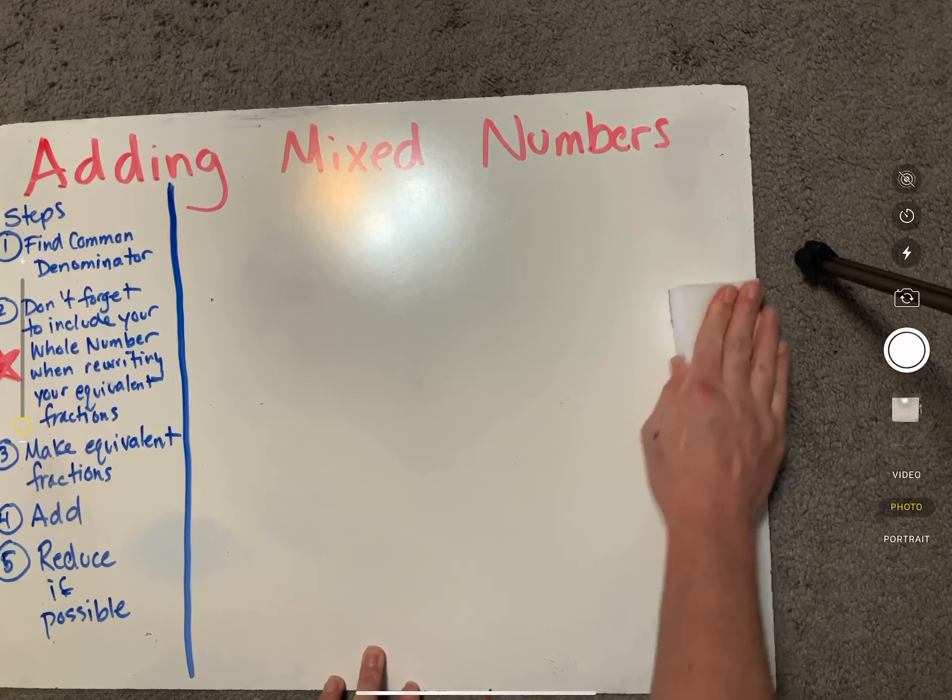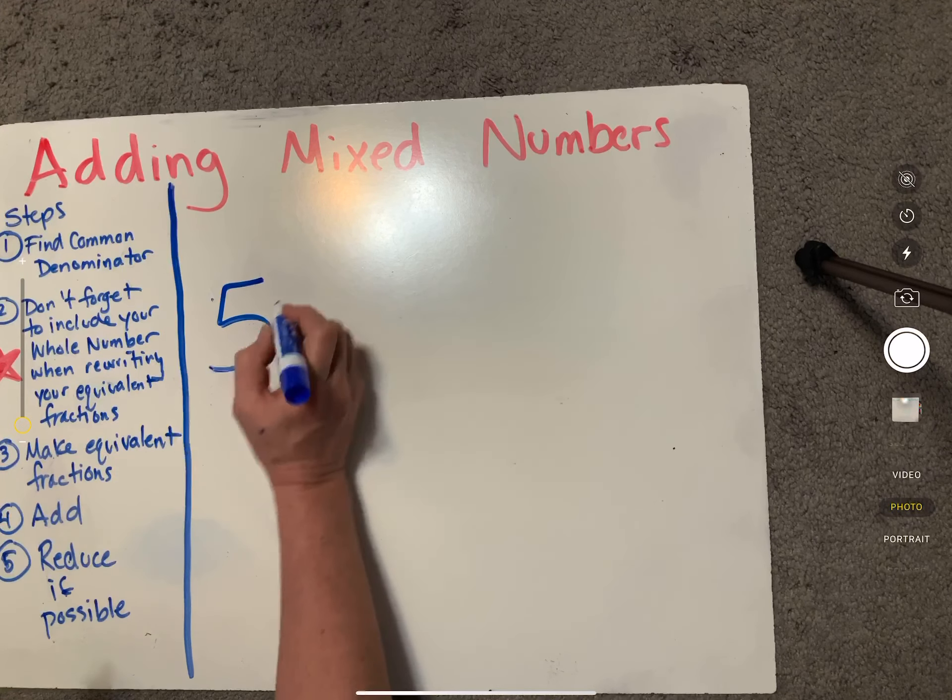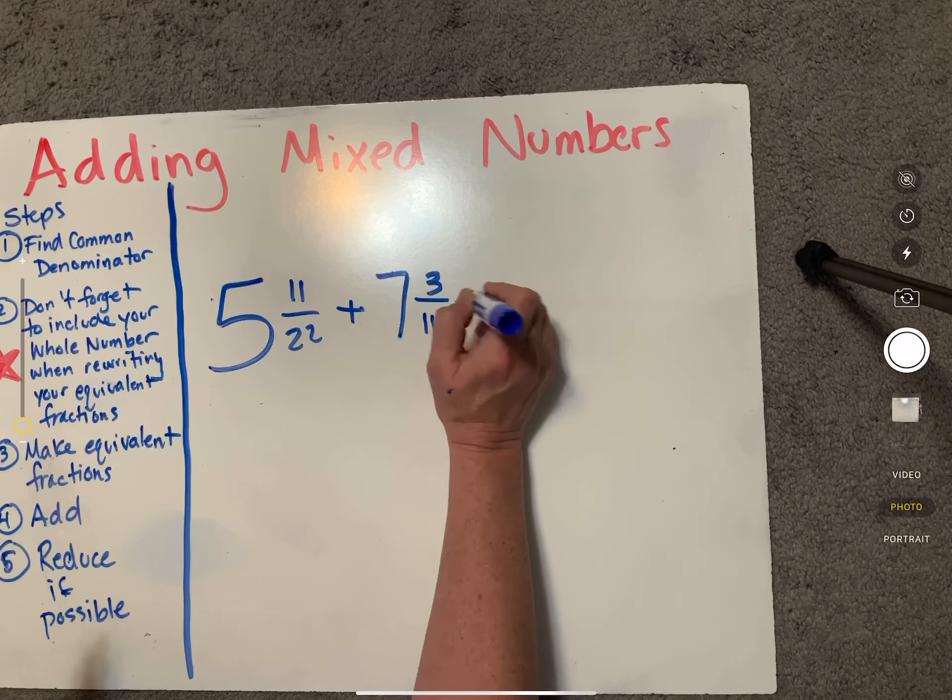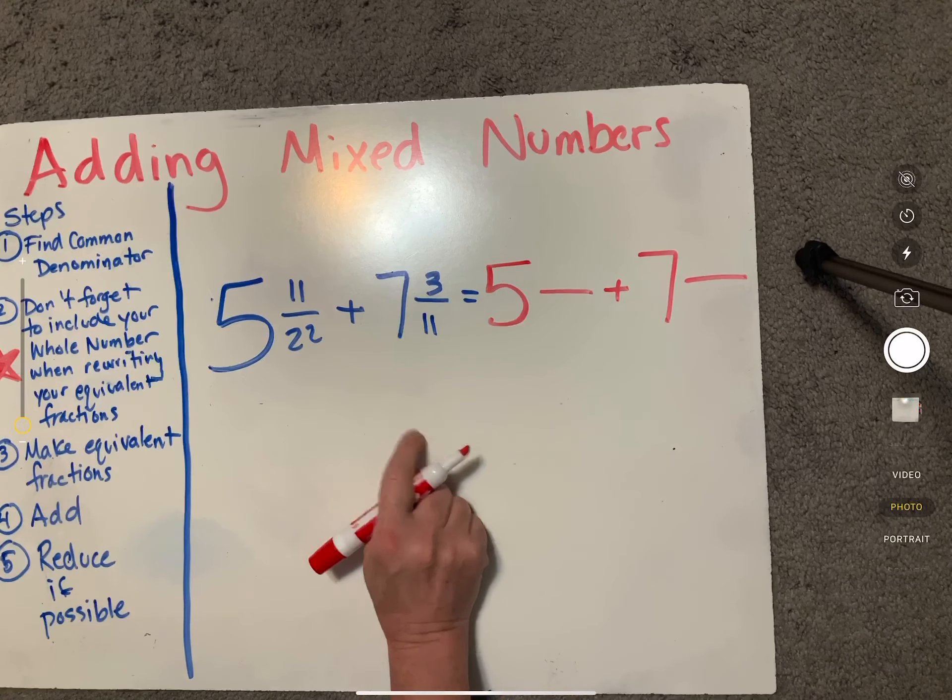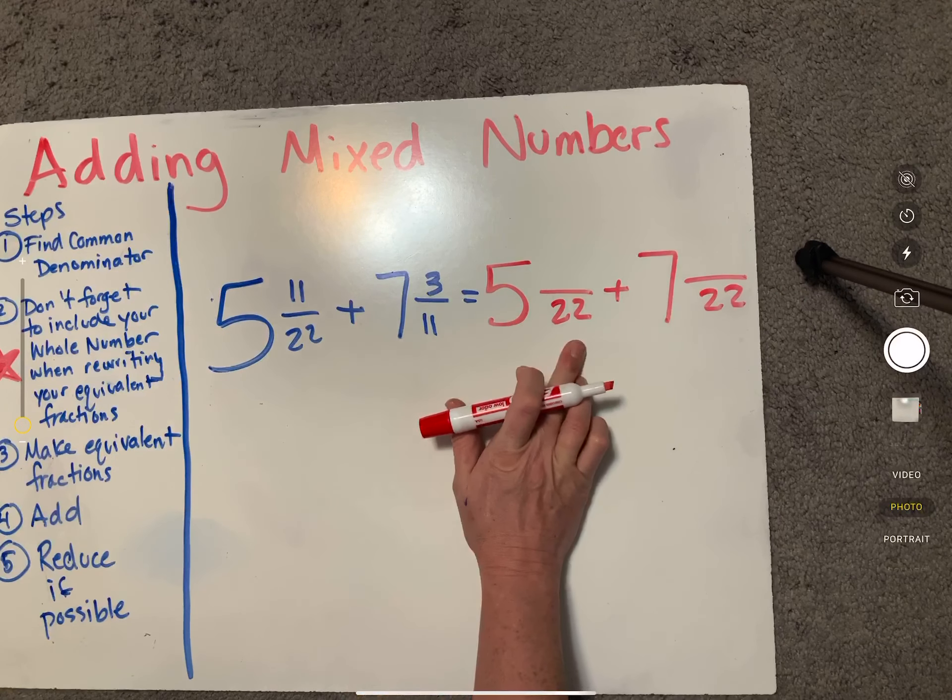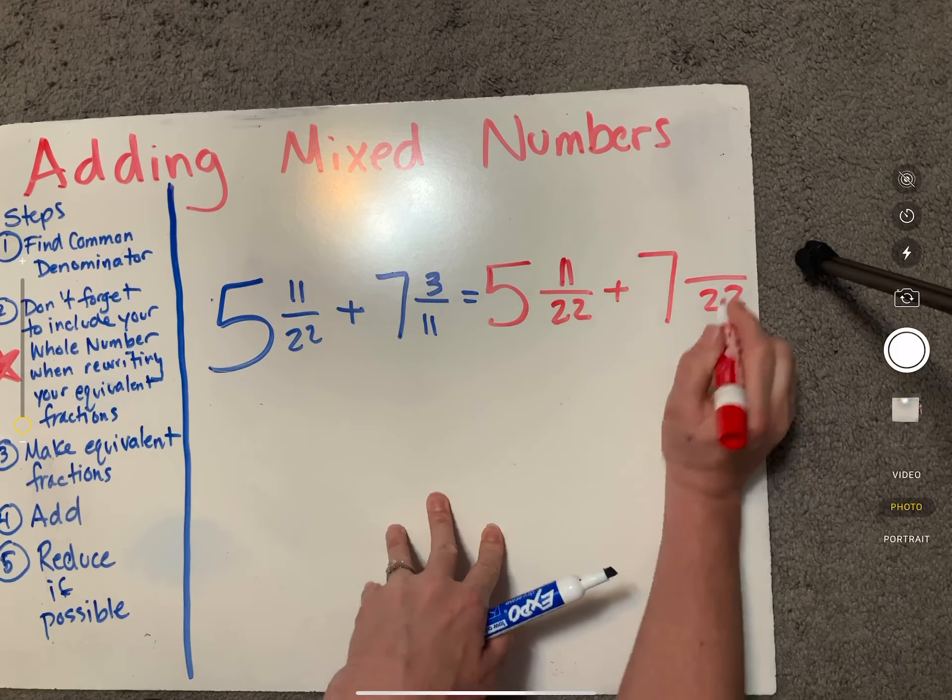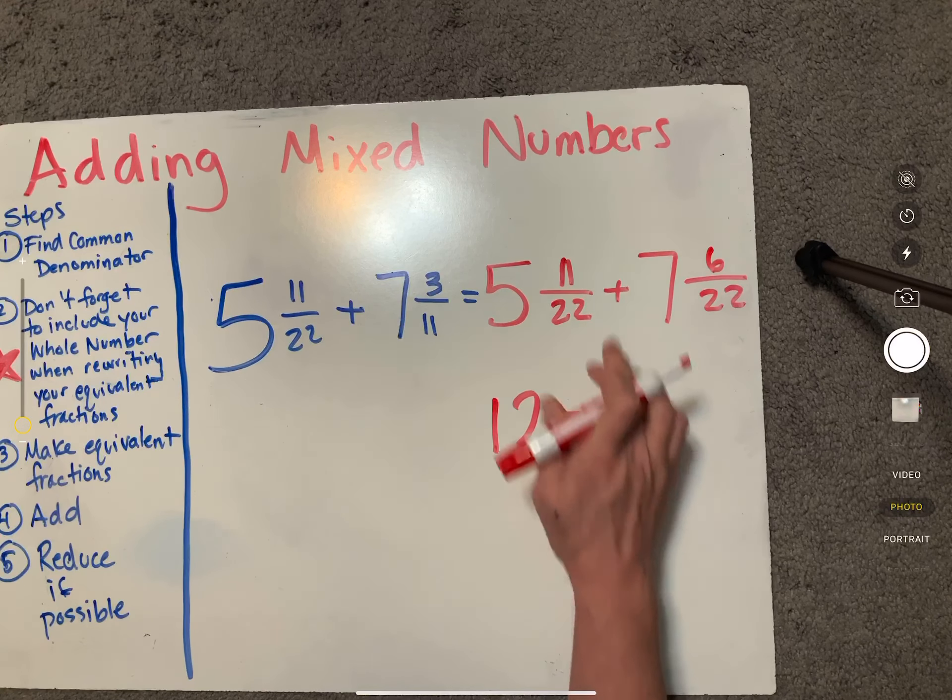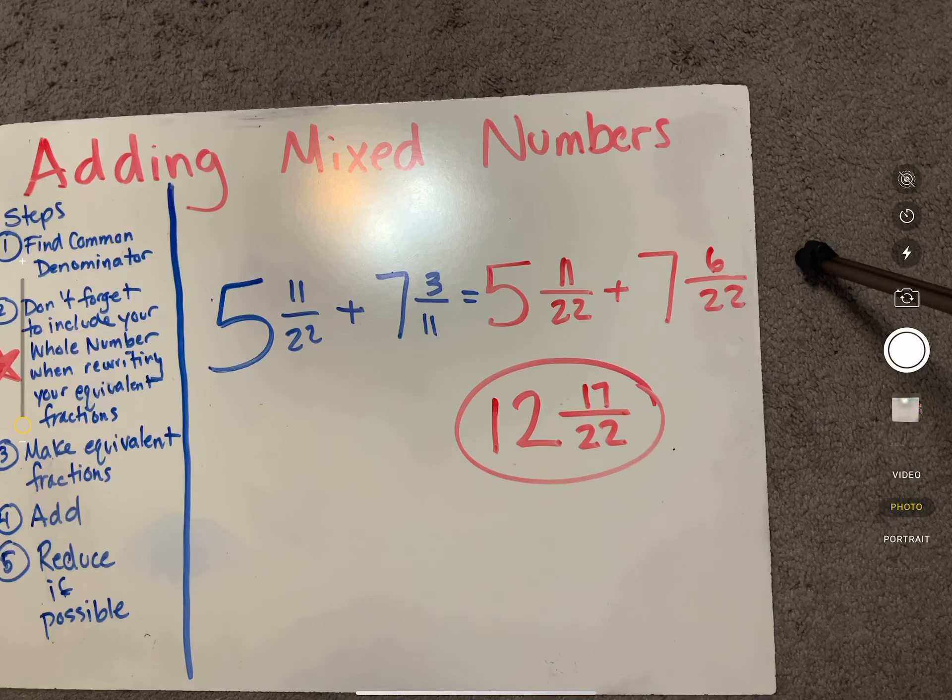Let's try another one. Let's do another horizontal one. Five and eleven twenty-seconds plus seven and three elevenths. Once again, transferring your whole numbers to your equivalent fractions. My common denominator here is going to be 22. 22 times one is 22, 11 times one is 11. 11 times two is 22, three times two is 6. Now we're going to add these up. Five plus seven is 12, 22 on the bottom. 11 plus six would be 17, and that is in lowest terms. So our answer is going to be 12 and 17 twenty-seconds.